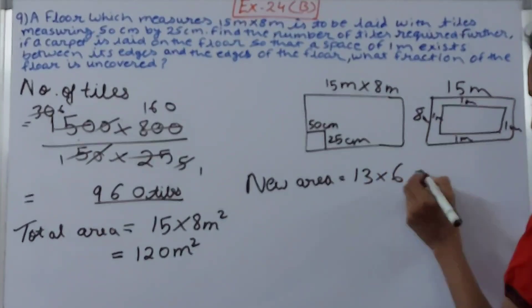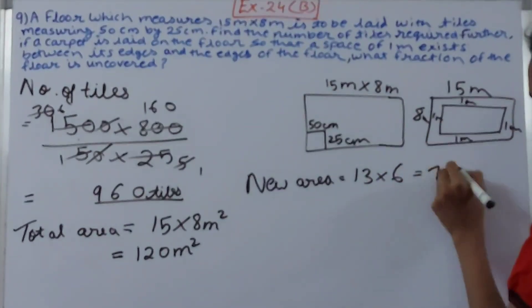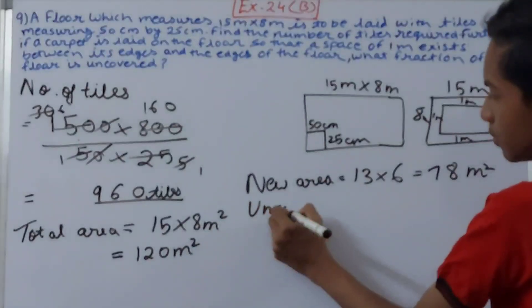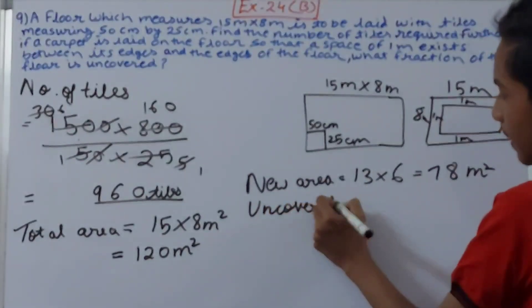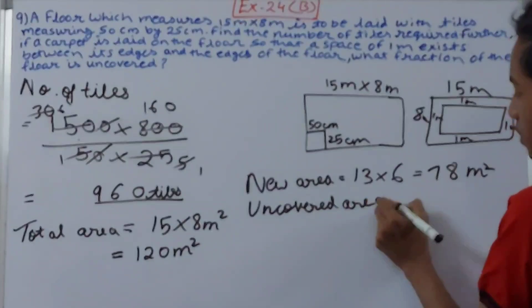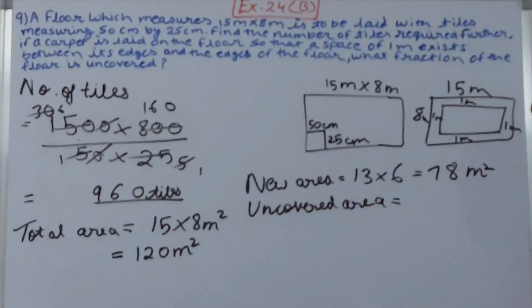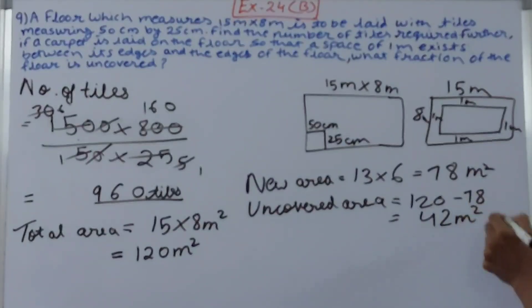This will be 78 square meters. So uncovered area equals to what? Subtract new area from the total area, or you can call that original area as well. So 120 minus 78. 30 and 80, 40 and 2, 42. 42 square meters. Now this becomes our uncovered area, but the fraction we have to calculate.